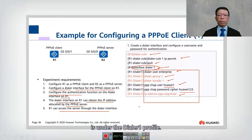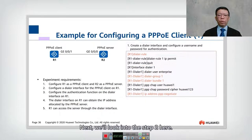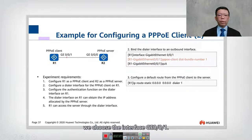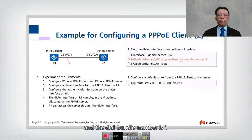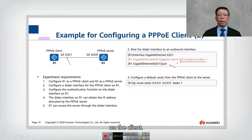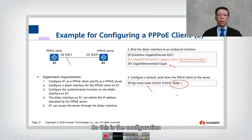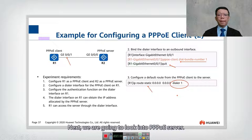Remember that the interface we are using is called dial one, and all the information specified is under the dial one profile. For step two, we are going to bind the interface. To do that we choose interface 0/0/1, and as you remember we have a bundle — bundle number one — followed by the quit command. Finally, we also need to configure the default route so that anything going outside from our network will go through dial number one. This completes the configuration on the PPPoE client.